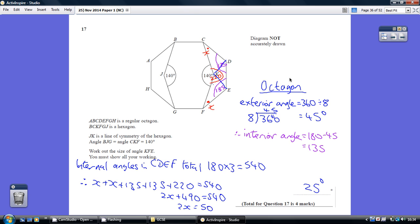Now with an octagon, which is eight sides, we know that exterior angles, which for every regular shape, add up to 360. So each exterior angle is going to be 360 divided by 8, which is 45.